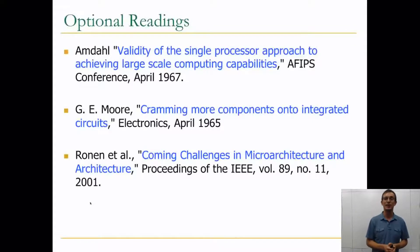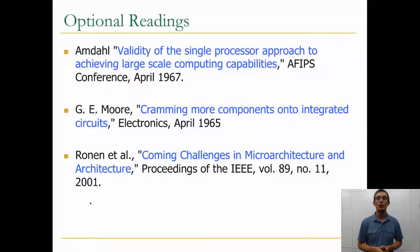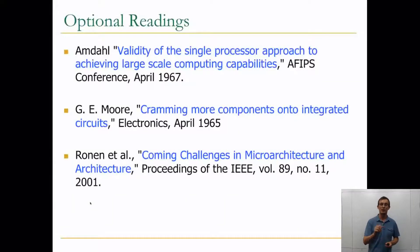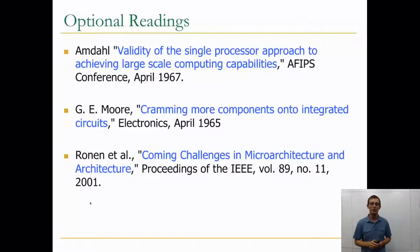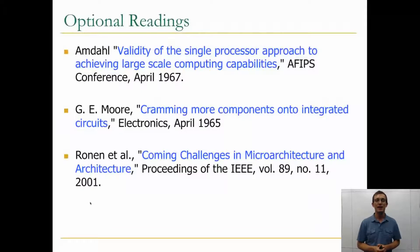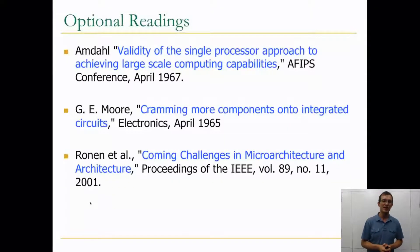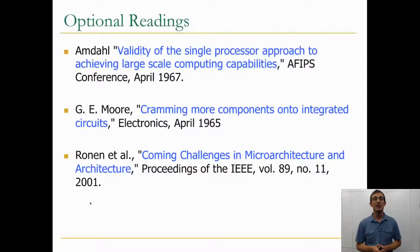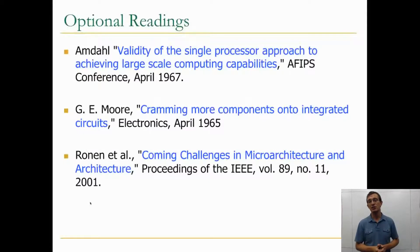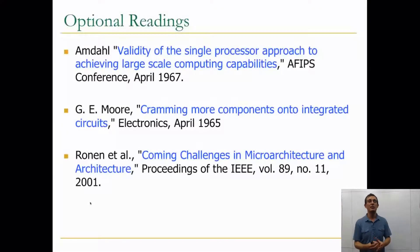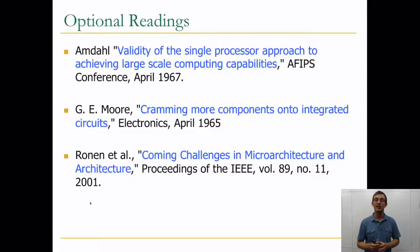The second optional reading is Moore's 'Cramming More Components onto Integrated Circuits,' published in 1965 — a fun and instructive read with good analysis and projection of components at that time. The last optional reading is by Ronan et al., 'Oncoming Challenges in Microarchitecture and Architecture,' from 2001 in the same issue as Yale Patt's paper. It focuses mainly on challenges faced in single-core design at that time, so it doesn't cover multi-core challenges we face today, but it's a very good read.